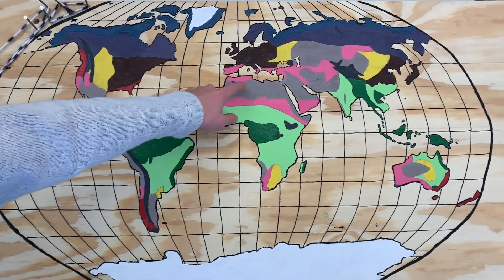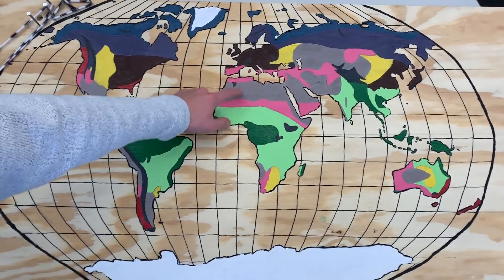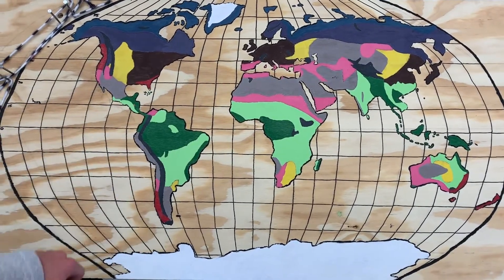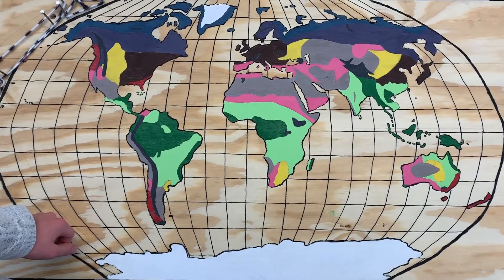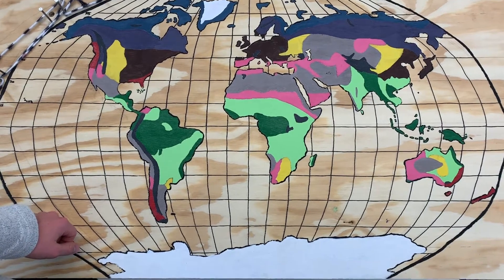As we move out from the equator we'll see these gray areas start to pop up more and also these pink areas. These are our deserts and our temperate shrublands. These are both going to be more dry and less rich soils. They're also going to be a lot less diverse in their species.